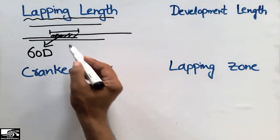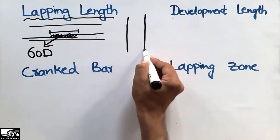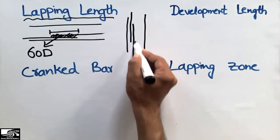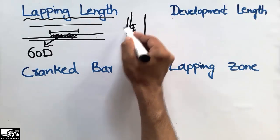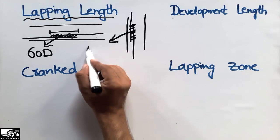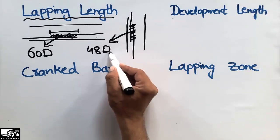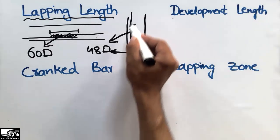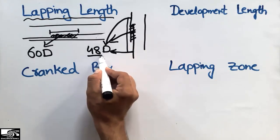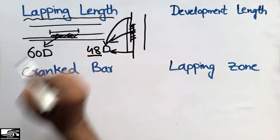In the case of a column, the overlapping length — for example, if this is a column with one steel bar overlapped with another — is equal to 48 times the diameter of the smaller bar. Here D represents the diameter of the smaller bar, whichever bar is smaller. Multiplying by 48 gives the required lapping length for a column.